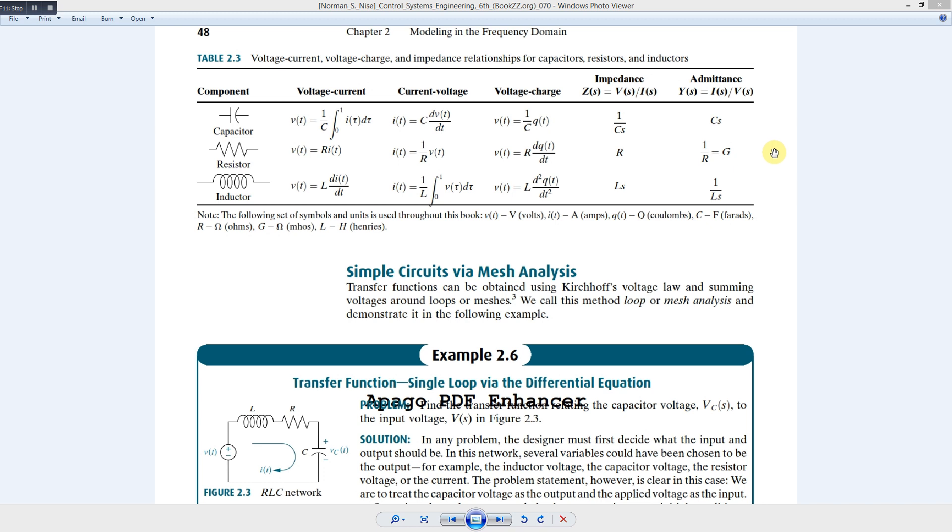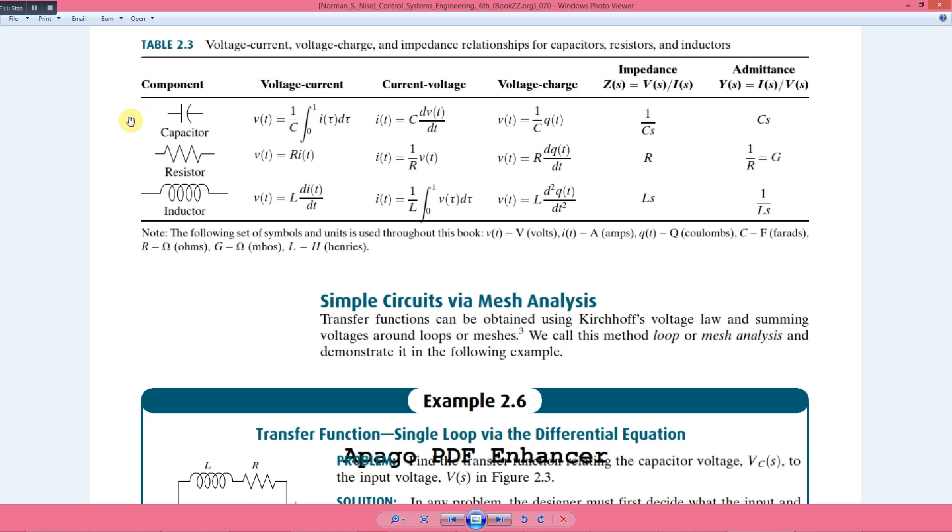First of all, here we have a capacitor. Capacitor and inductor are energy storage elements, whereas resistor is a passive element which is an energy dissipation device. All are passive devices, but capacitor and inductor are energy storage devices.